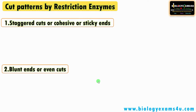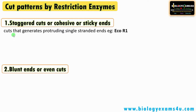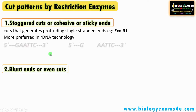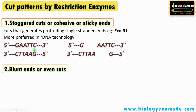Cut patterns by restriction enzymes: the first type is sticky ends or staggered cuts — enzymes that generate protruding single-stranded ends or extensions, as in the case of EcoRI. After the cut, there are single-stranded overhangs. This type of cut is called a staggered cut or sticky-end cut. Any complementary sequence to these overhangs will form hydrogen bonds easily, which is why sticky ends are widely preferred in recombinant DNA technology over blunt ends.